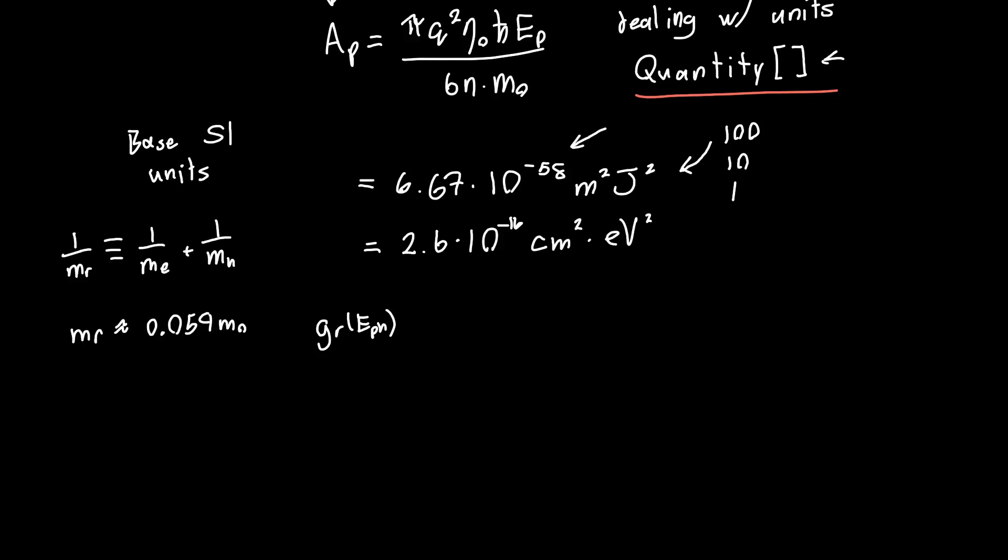And so if you plug in the value Eg plus 0.1 eV into this gr, our reduced density of states of e-photon divided by e-photon. And you plug this in with the reduced mass, you should get a value of, in SI units, 7.9 times 10 to the 62 meter minus 3 joule minus 2.